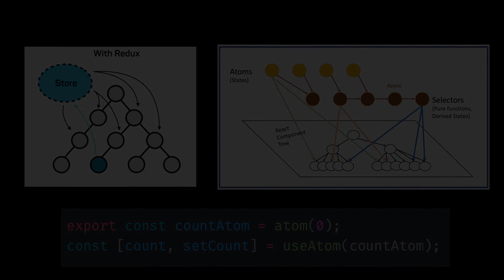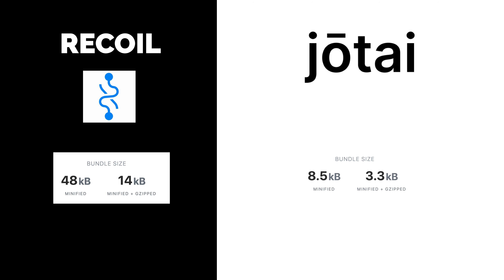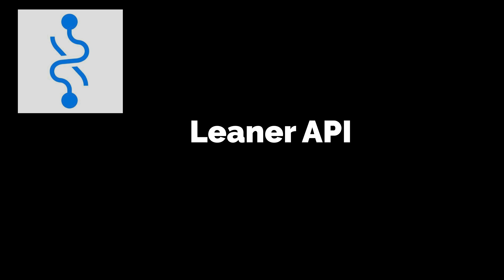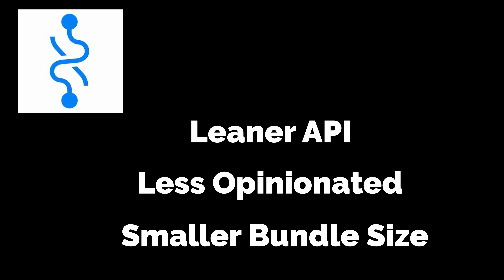The most important comparison we have to make is between Jotai and the Recoil state management library, which is the library made by Facebook. The concept of atoms and small pieces of state are common in both libraries, making them seem very similar. However, Jotai attempts to differentiate itself by saying it has a leaner API, it's less opinionated, and has a smaller bundle size.